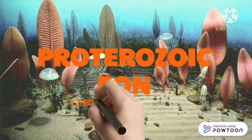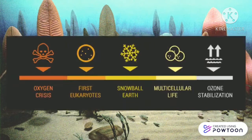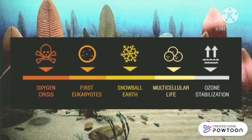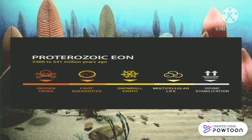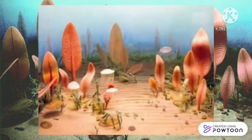The Proterozoic Eon began 2.5 billion to 541 million years ago. It is a geological eon representing the time just before the proliferation of complex life on Earth. The well-identified events of this eon were the transition to an oxygenated atmosphere during the Mesoproterozoic, several glaciations including the hypothesized Snowball Earth during the Cryogenian period in the late Neoproterozoic, and the Ediacaran period, which is characterized by the evolution of abundant soft-bodied multicellular organisms.